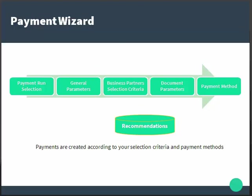The next step is where you select the business partners for your payment run — the business partners the system checks for invoice due, including expanded selection criteria. Then you define the selection criteria for documents that the system includes, such as date ranges and other parameters, followed by specifying the payment methods used in the payment run.